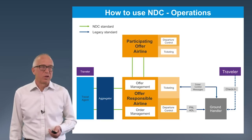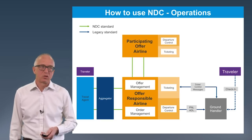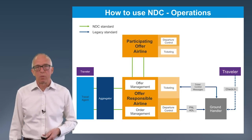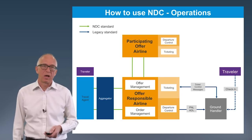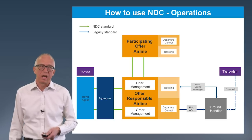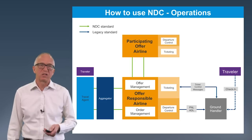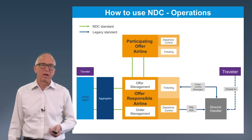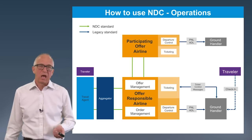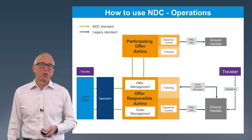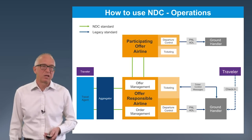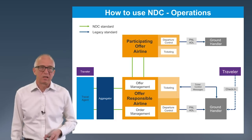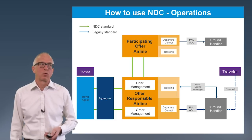So what happens if we have an interline situation? We've established how the interline partner — the participating offer airline — receives its order, it knows about the ticketing information, and it's going to have its own departure control system managing its flight. It may have its own ground handler and it will have provided its own passenger name list, and it will provide the changes to those through the ADL message.